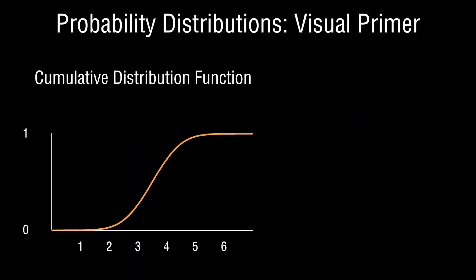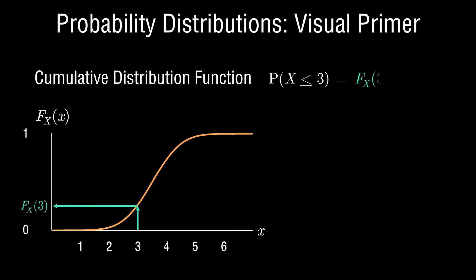Let's look at a cumulative distribution function and overlay the typical notation used in probability. For a random variable X, we use lowercase x to represent the outcomes, and capital F sub x of x to represent the cumulative probability for that outcome. Suppose you are asked: what is the probability that this random variable will take on a value less than or equal to 3? You can answer that directly from the cumulative distribution function, since by default it is the summation of all probabilities less than or equal to a given outcome. You look at the outcome of interest — in this case 3 — and map it directly to the cumulative probability.